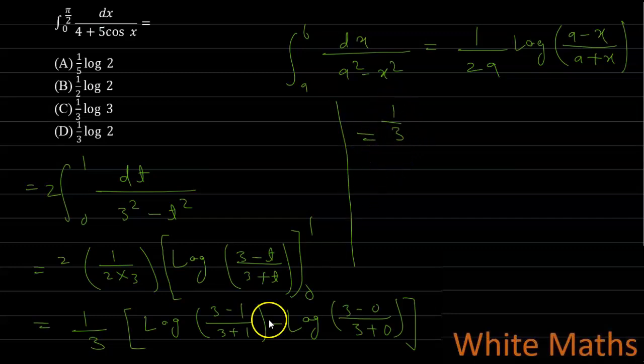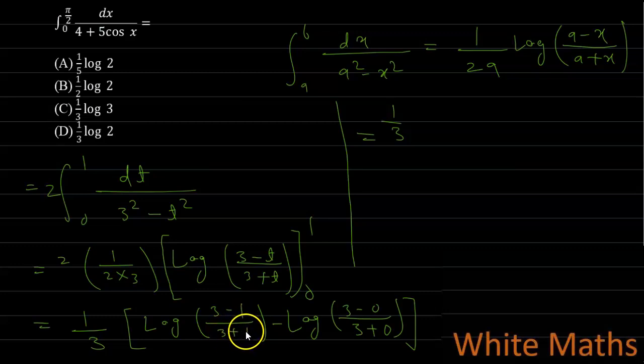This equals (1/3) times [log(3 − 1)/(3 + 1) − log(3 − 0)/(3 + 0)], which is (1/3)[log(2/4) − log(3/3)].